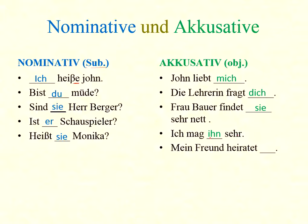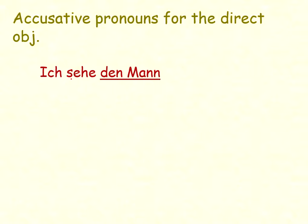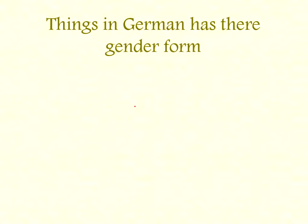'Ich mag ihn' — 'ihn' is used for 'he/him.' So 'ich mag ihn' means I like him. Now for the direct object: 'Ich sehe den Mann' — here 'den Mann' is subject... verb... object. 'Den Mann' changes to 'ihn.' 'Ich sehe ihn' — subject, verb, object pronoun. If we translate to English: 'I saw the man' becomes 'I saw him.'